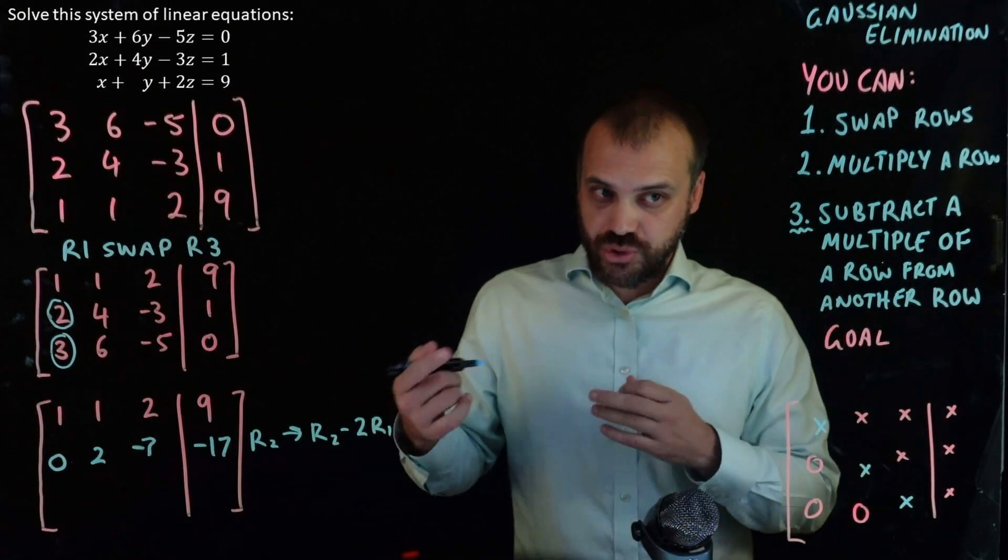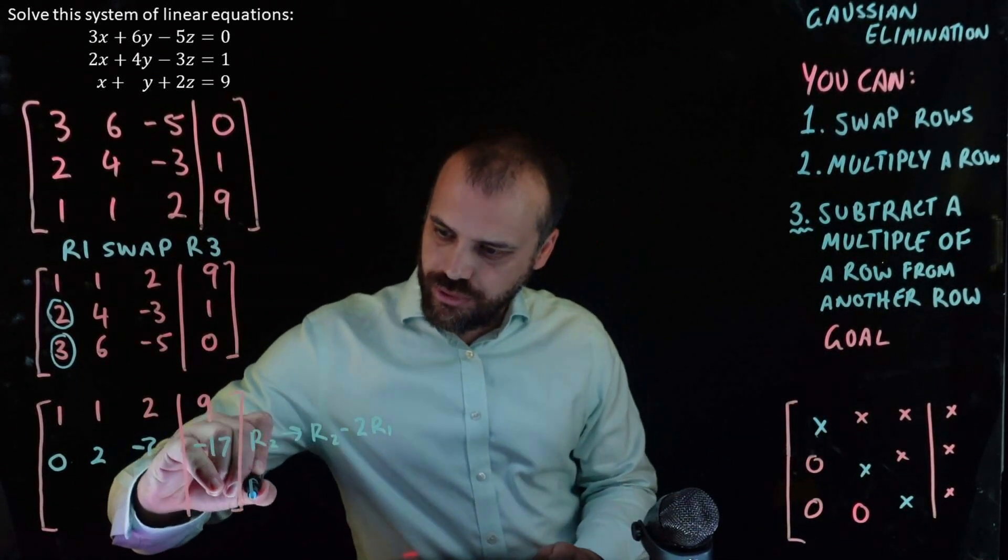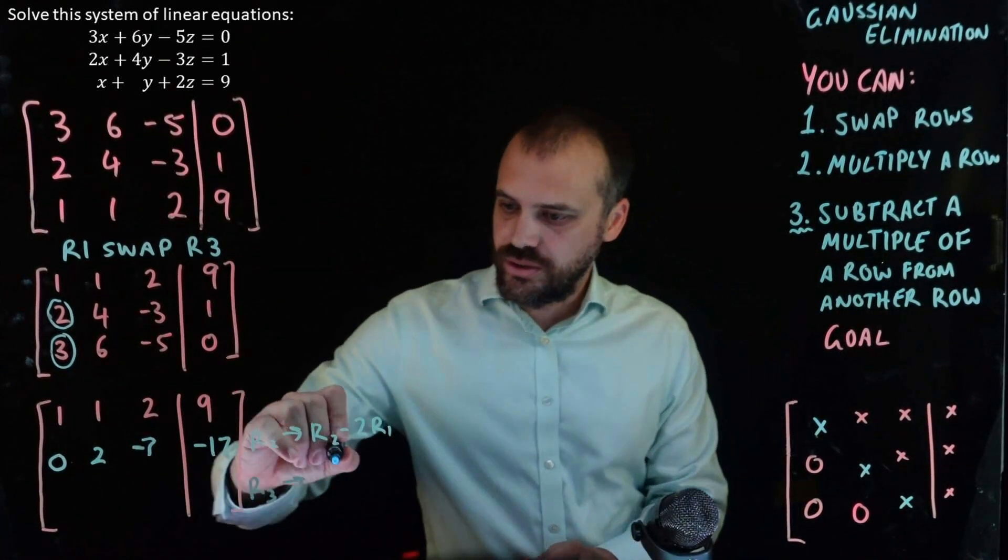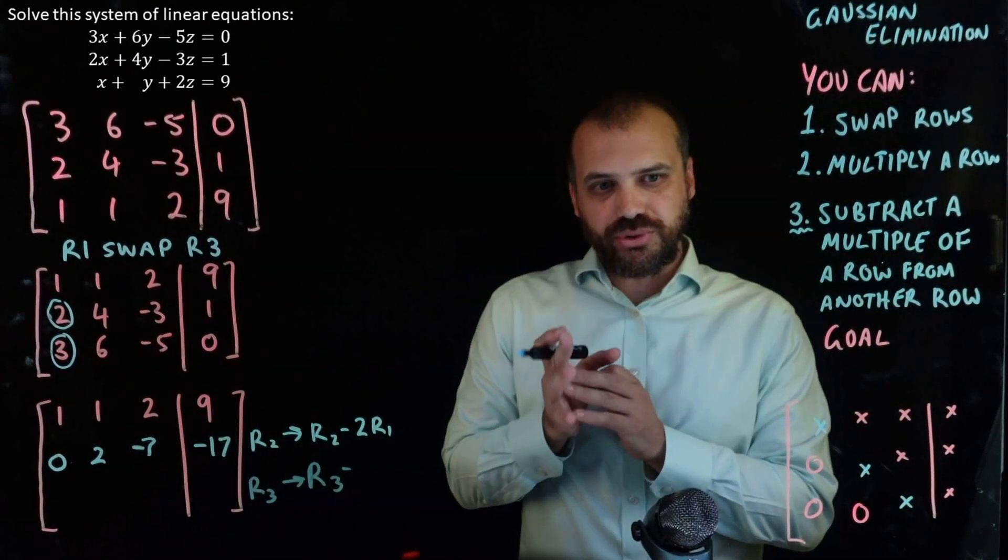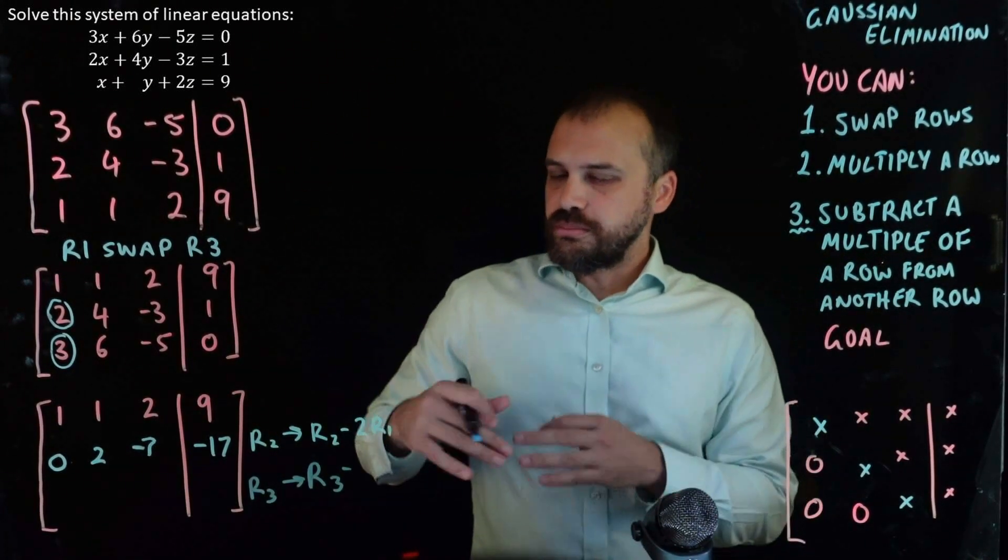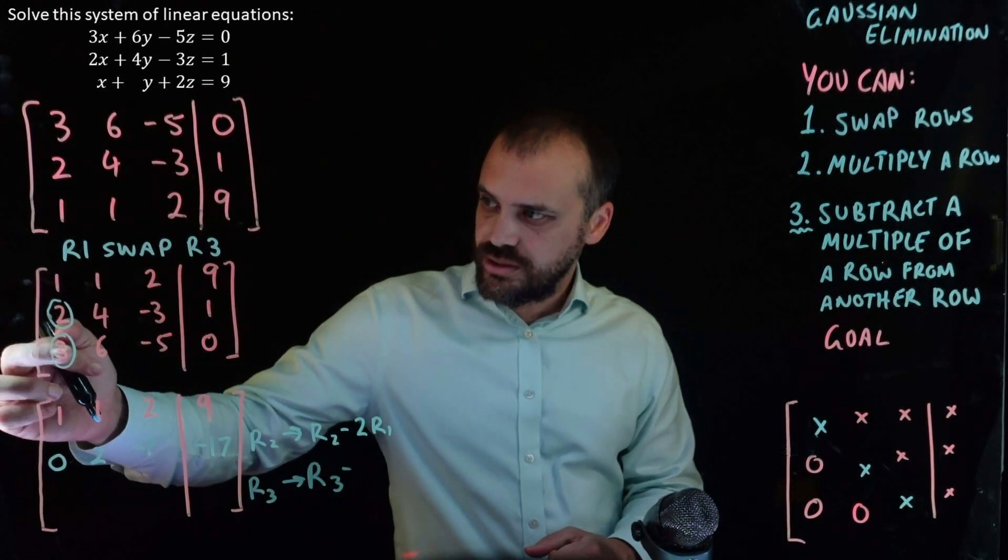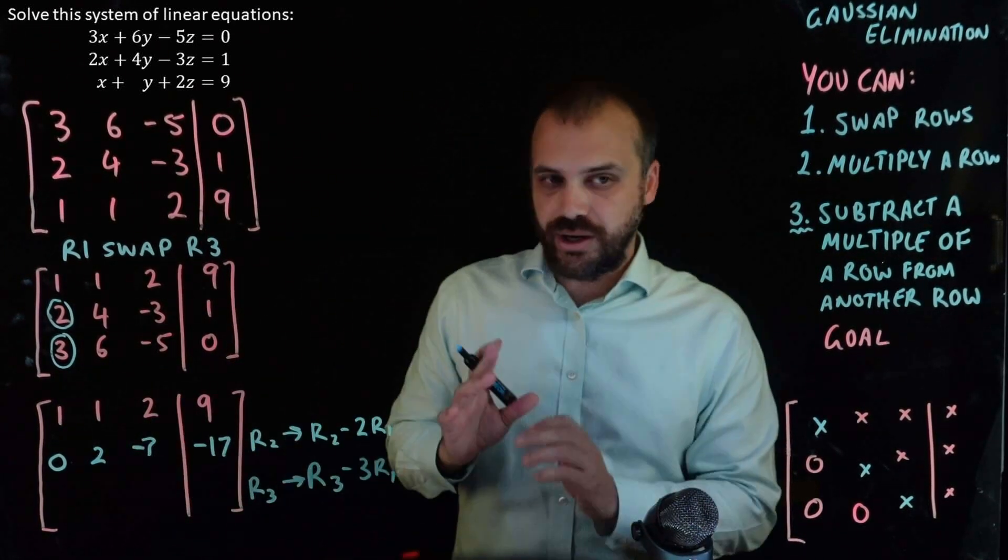Okay, we're going to do the same sort of operation on row three here to get rid of this three. So, row three, we're going to transform it by doing row three minus some multiple of row one. What multiple of row one do we need to subtract from this? We need to subtract three times row one.